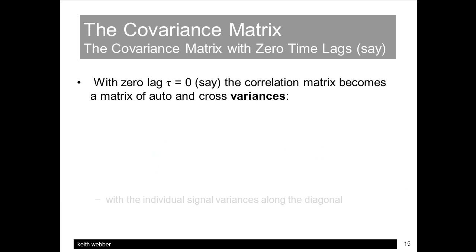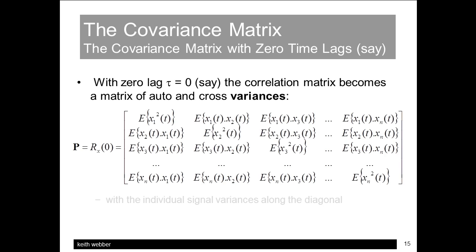Further, if we just for a moment choose a fixed value of zero time lag tau, the covariance matrix becomes a matrix of signal variances or strengths. The diagonal terms are the individual signal variances, and the off-diagonal terms are cross-variances.